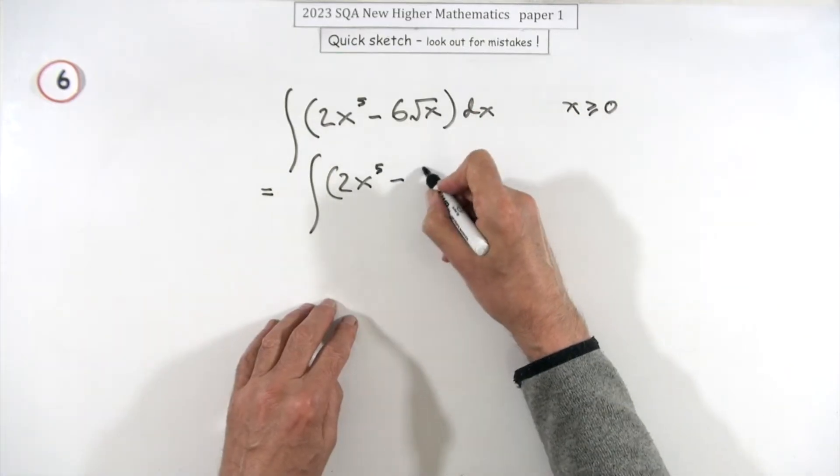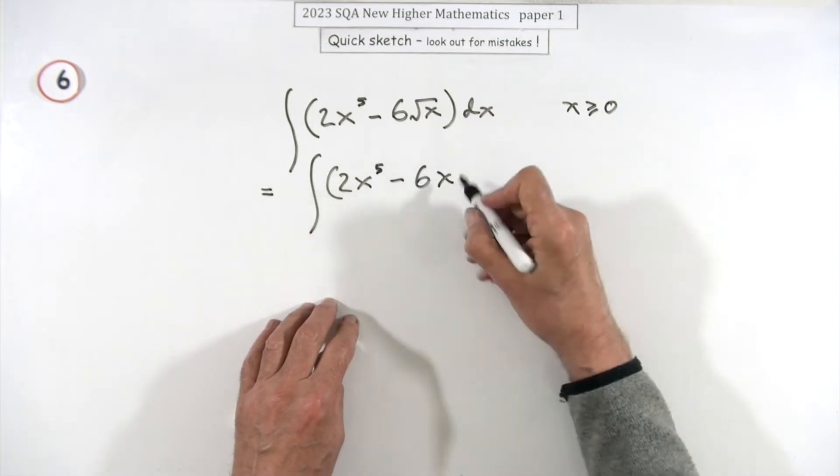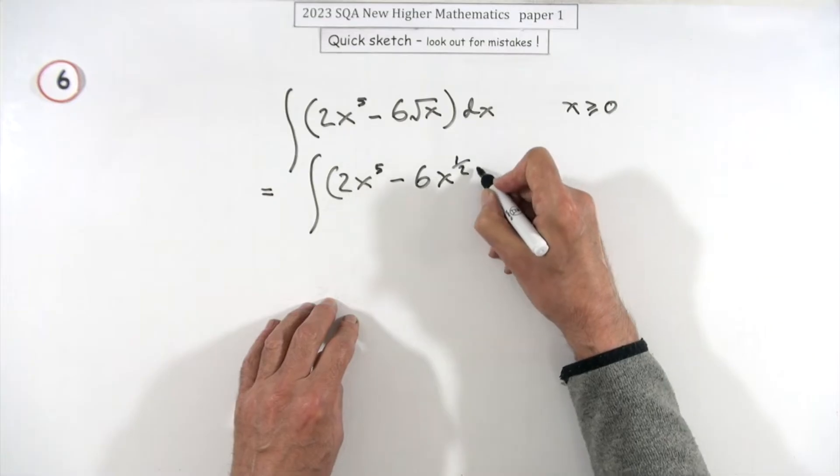That part, so you can see the x is explicitly in index form, that's x to the power five, that's x to the power a half.